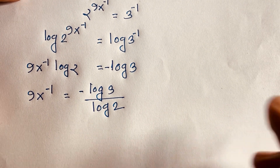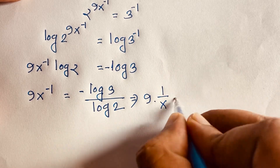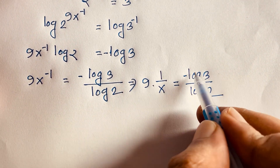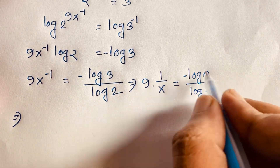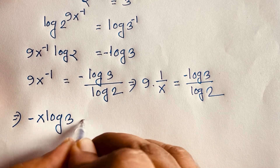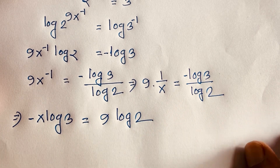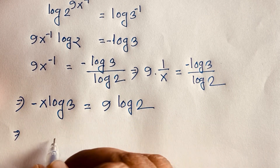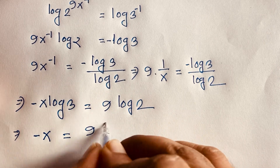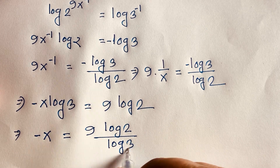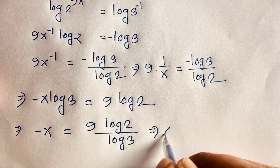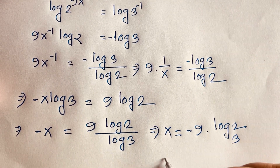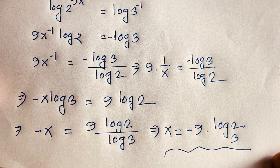So 9x minus 1 equals minus log 3 over log 2. I divide both sides by log 2. Then rearranging — multiplying across — gives minus x times log 3 equals 9 times log 2. Dividing both sides by log 3, we get minus x equals 9 log 2 over log 3. Moving the negative sign across: x equals minus 9 times log 2 over log 3.